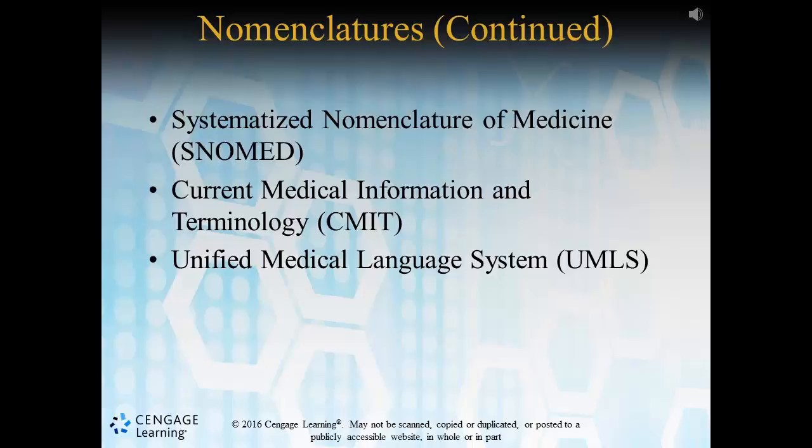Current Medical Information and Terminology, or CMIT, was developed in 1981 and is used for naming and describing of conditions related to areas of medicine.